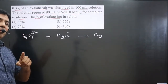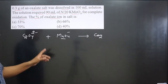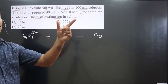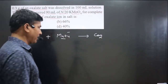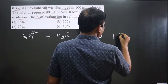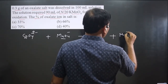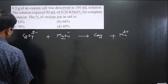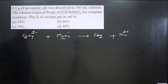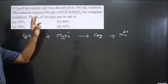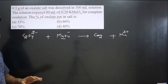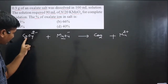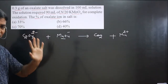Oxalate ion comes from oxalic acid, meaning this reaction takes place in acidic medium. In acidic medium, MnO₄⁻ always converts into Mn²⁺. The oxalate ion undergoes oxidation and converts into carbon dioxide, where carbon is in its maximum oxidation number. The reaction is complete. We have oxalate ion and permanganate ion.